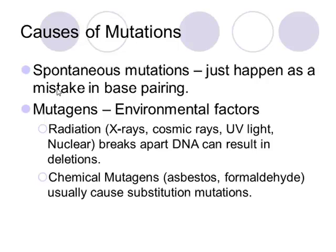There are a lot of causes of mutations. There are spontaneous mutations that happen like problems in a copy machine — just a mistake in base pairing. We also have mutagens, which are environmental factors. Things like UV light can mess with DNA — specifically, UV exposure can break apart DNA and result in deletions. There are also chemical mutagens like asbestos and formaldehyde, which usually cause substitution mutations.